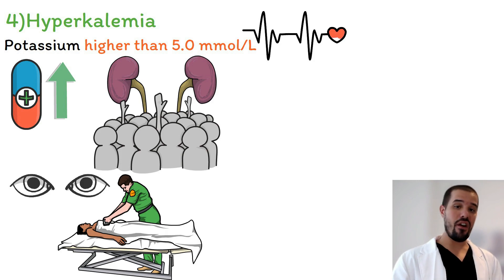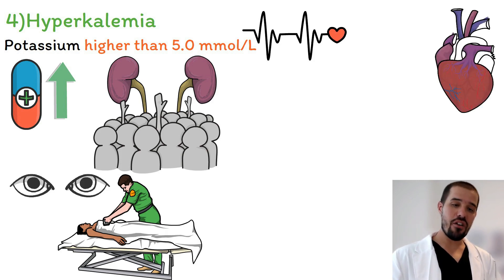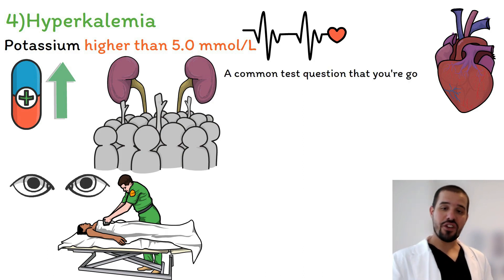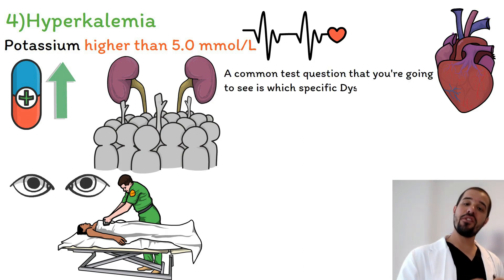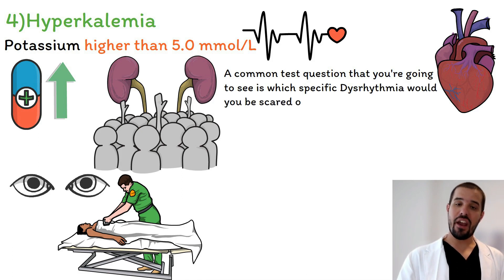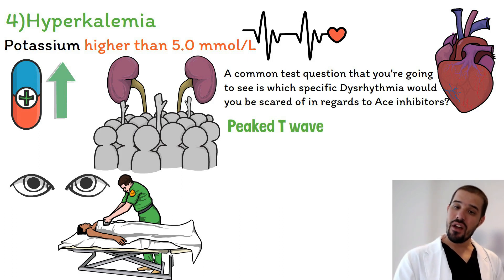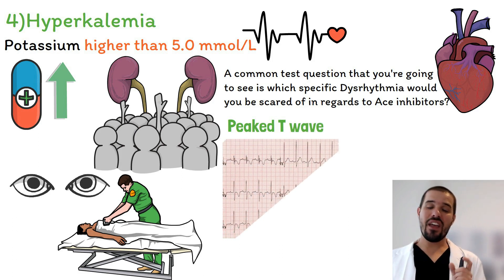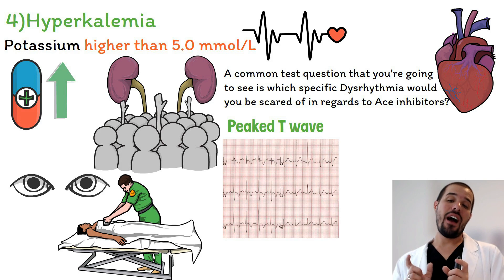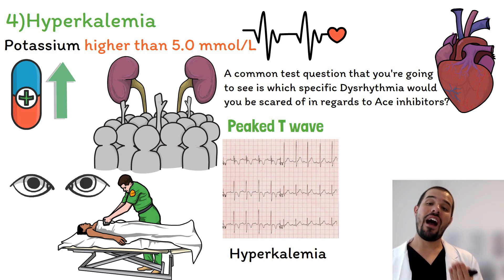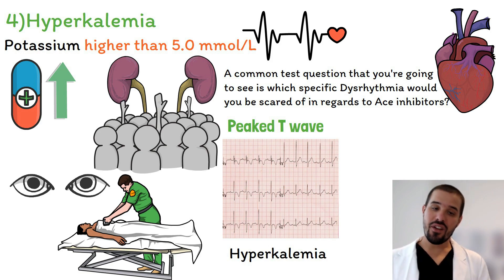Whether you're working on a med-surg floor or in a doctor's office performing a routine EKG, what you are going to monitor for is the cardiac rhythm. A common test question asks which specific dysrhythmia to watch for with ACE inhibitors — that would be peaked T waves. Peaked T waves have a causative factor of hyperkalemia: ACE inhibitors cause hyperkalemia, and hyperkalemia causes peaked T waves.